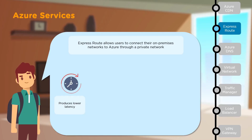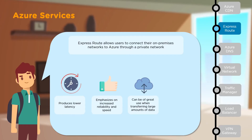Next, we have ExpressRoute, which allows you to connect your on-premises network to Azure through a private network. By default, this lowers latency and increases reliability and speed. It can be of great use when you have to transfer large amounts of data between networks, and it can also be used to add compute or storage capacity to data centers.